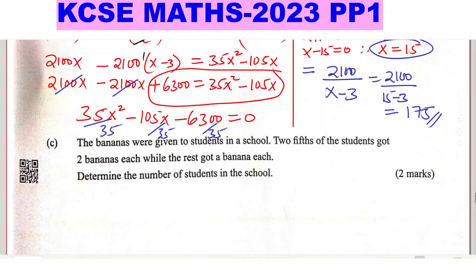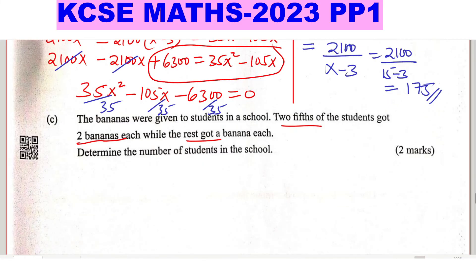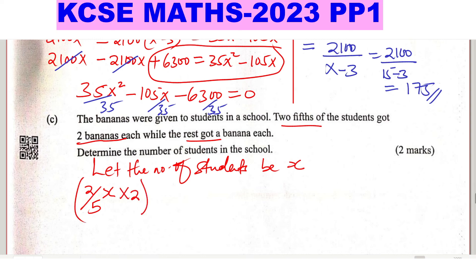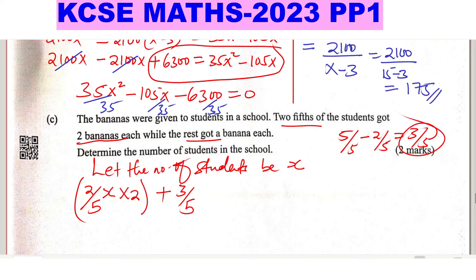Part C: The 175 bananas were given to students in the school. Two-fifths of the students got two bananas each, while the rest got one banana each. Let X represent the number of students. Two-fifths of X times 2 represents bananas given to the first group. The rest — three-fifths of X — got one banana each. Setting the total equal to 175: (2/5)X times 2 plus (3/5)X times 1 equals 175.